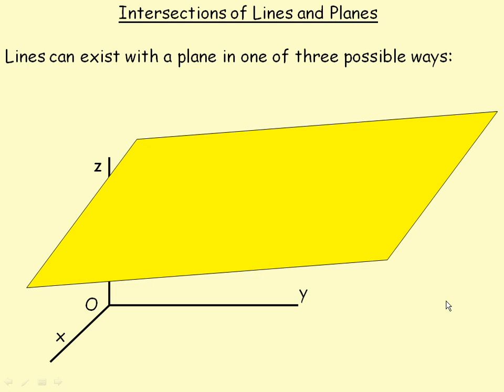In this lesson, we'll take a look at how lines and planes can intersect. The topic on this particular page is to show you a diagram of what those three scenarios look like. Then in the examples on the following pages, we'll look at some algebraic examples where you're given the equation of a line and a plane, and how you find the intersection points.